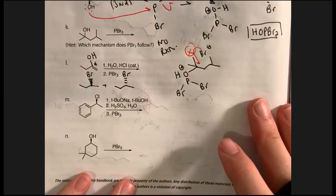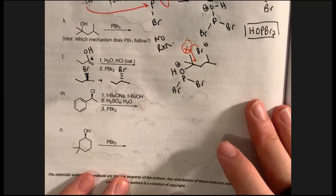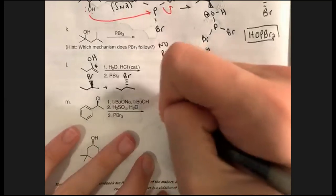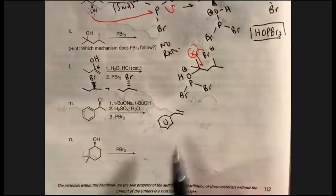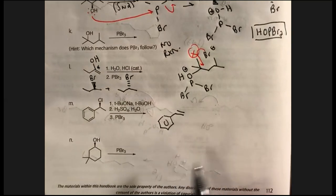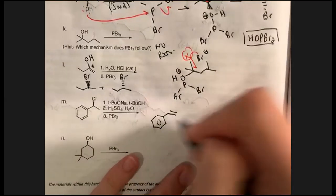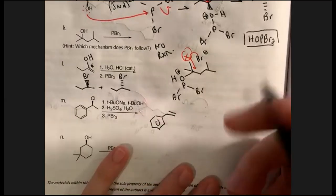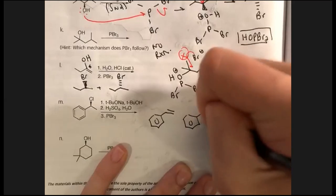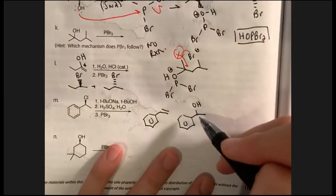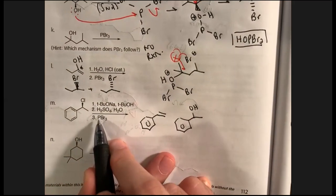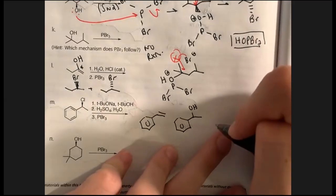Letter M: we have tert-butoxide anion with tert-butanol — a bulky base — which gives the Hofmann alkene. That product is styrene, the monomer that forms polystyrene used in plastic bottles. Step two is acid-catalyzed hydration, forming the alcohol at the benzylic carbon. Again, since it went through a carbocation intermediate, we don't know if it's wedge or dash, so step three gives both alkyl halide enantiomers via SN2.